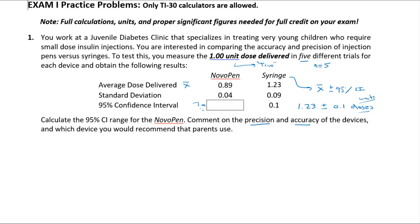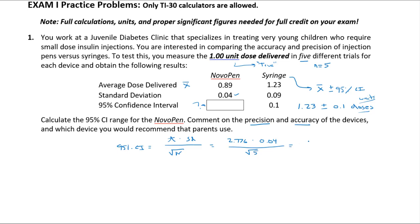For the Nova pen, we need to calculate the 95% CI using the equation on your equation sheet: 95% CI equals the t-value from the table — for five trials that's 2.776 — times the standard deviation of 0.04, divided by the square root of 5. Doing the arithmetic, I get approximately 0.05 doses.